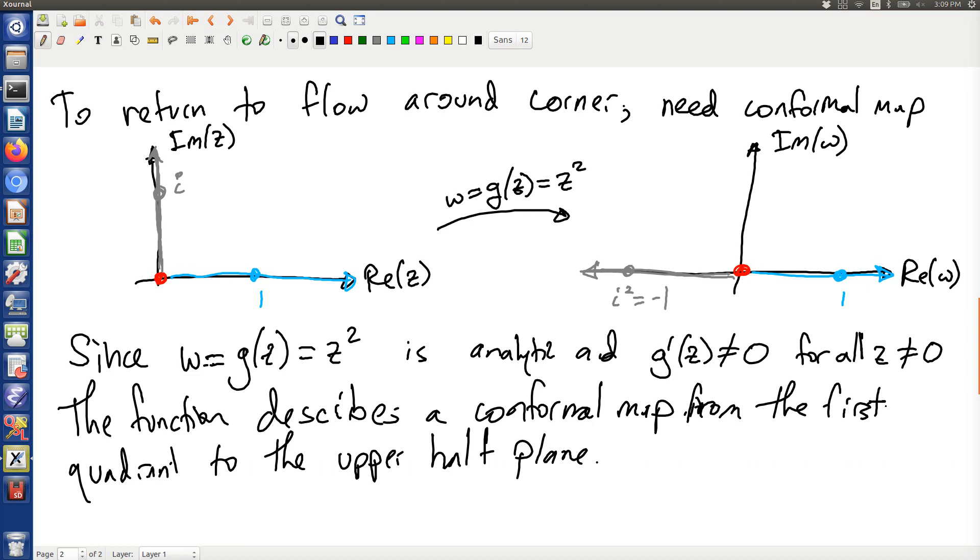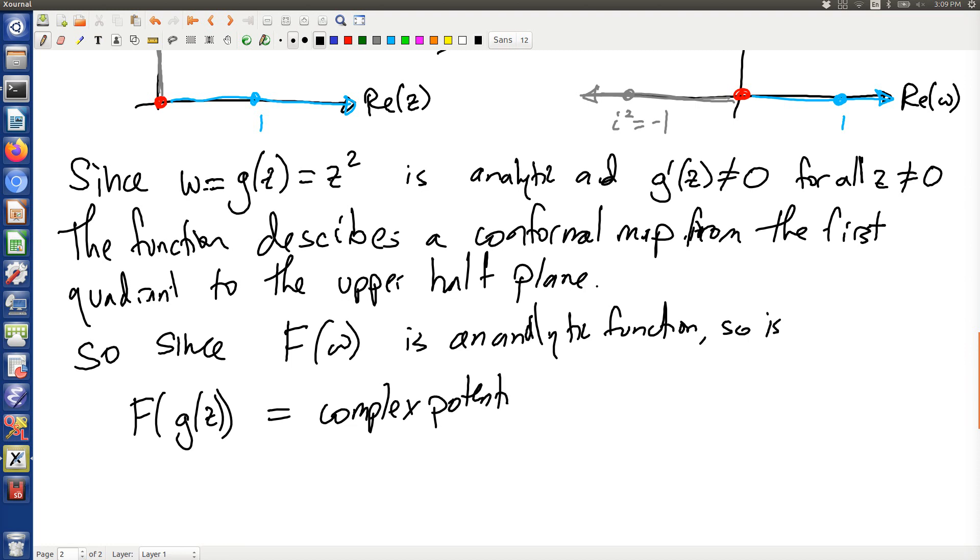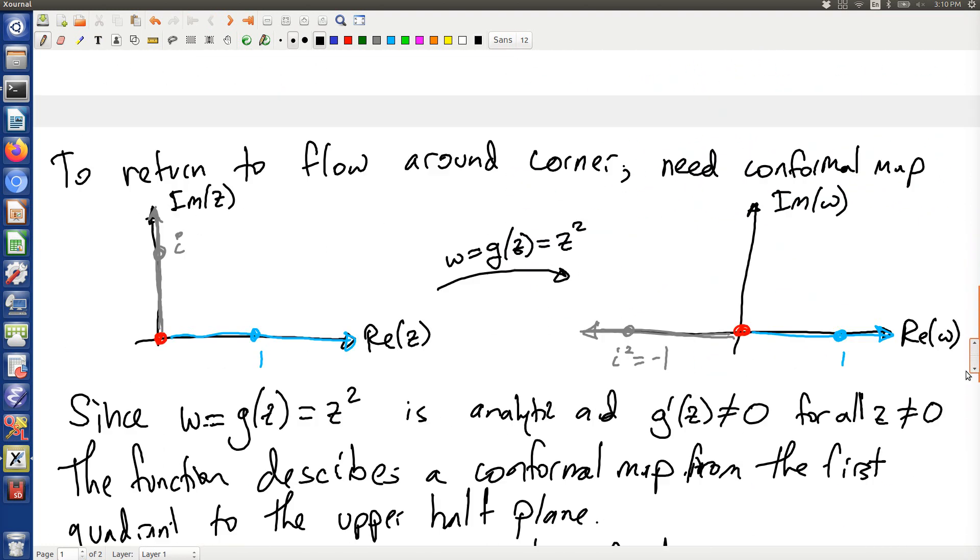So, we've got our conformal map in hand. We already know the flow solution on the W side of things. So, since F(W), our complex potential, an analytic function, so is F(G(z)). This is the complex potential for the flow in the first quadrant. Now, what is that? Well, G(z), this is F(z squared), G(z) is z squared, and F(z) is just a times z, a being a real number.